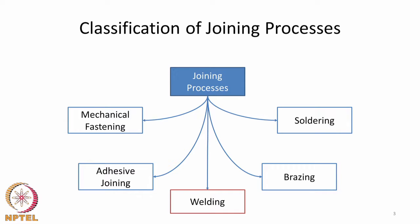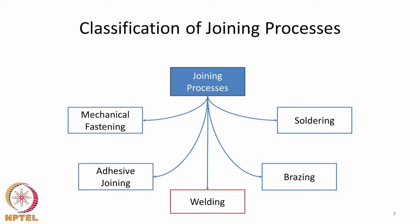A large number of joining processes exist and they can be categorized broadly into the following categories. Mechanical fastening joins parts together mechanically without a metallurgical bond. Adhesive joining uses epoxy and various polymeric materials for dissimilar parts. Brazing and soldering are joining processes important for materials with very different melting points, where a filler joins the mating parts rather than melting them. The difference between brazing and soldering is defined by temperature: 450°C is arbitrarily chosen as the cutoff — below 450°C is soldering, above is brazing.